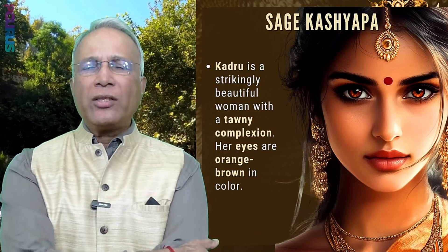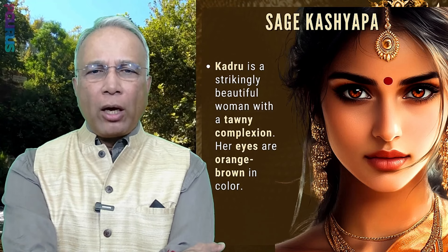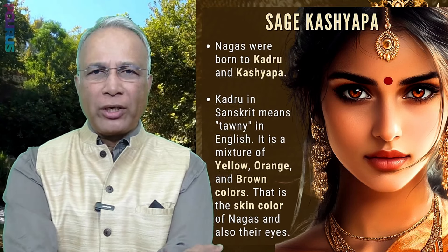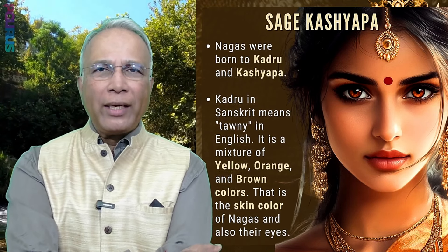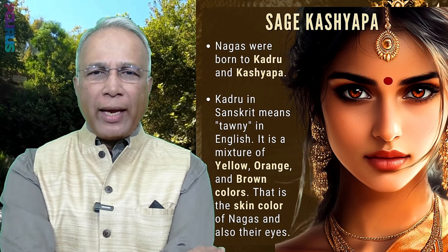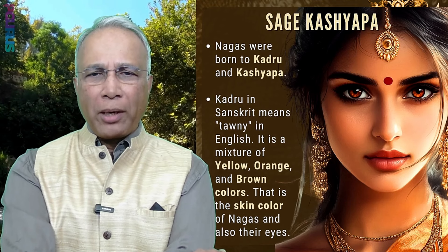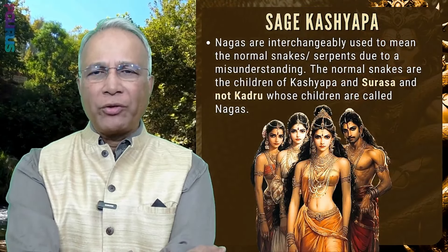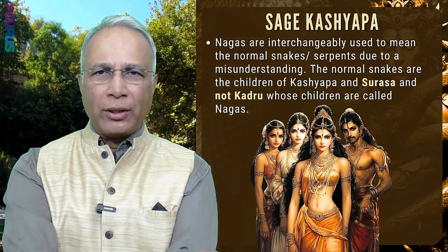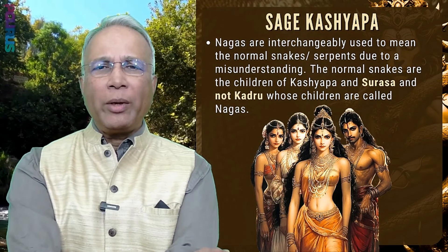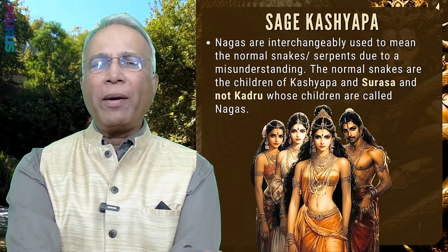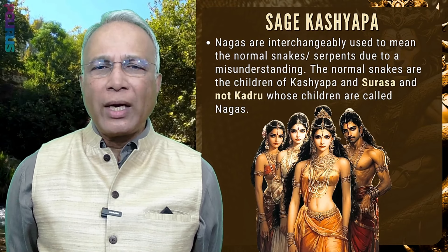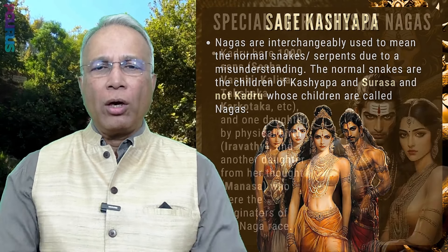For example, Kadru is a strikingly beautiful woman with a tawny complexion and orange-brown eyes. As you can see in the representation here, Nagas were born to Kadru and Kashyapa. Kadru in Sanskrit means tawny — a mixture of yellow, orange, and brown colors — and it is the same combination of three colors that sets apart the Naga skin color, which looks very similar to that tawny complexion. Now Nagas are interchangeably used to mean normal snakes or serpents due to a misunderstanding. The normal snakes are the children of Kashyapa and Surasa, not Kadru, whose children are called Nagas.